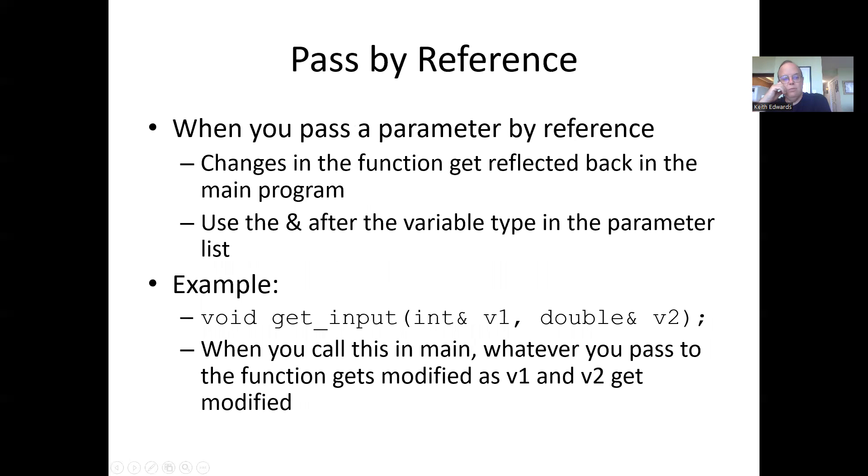With pass by reference, any changes that happen in the function get reflected back in main. We use the ampersand symbol after the variable type in the parameter. For example, to get input for two values v1 and v2, we would put an ampersand after the int for v1 and ampersand after the double for v2.